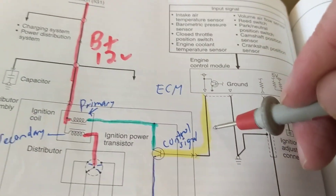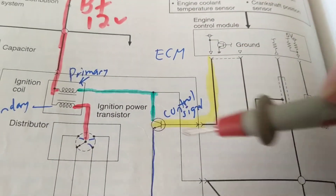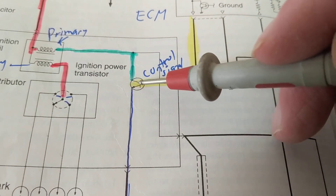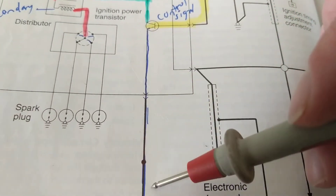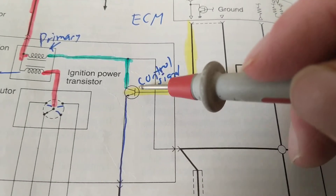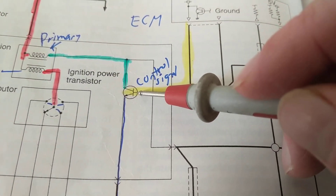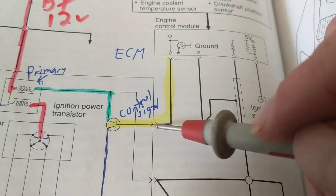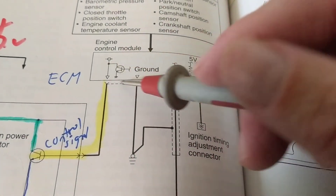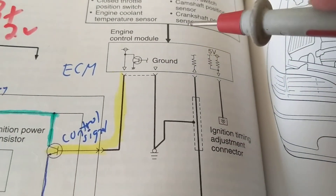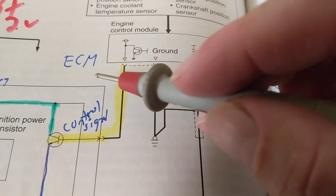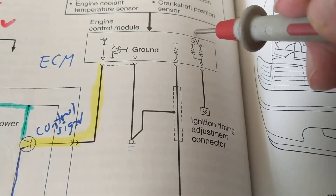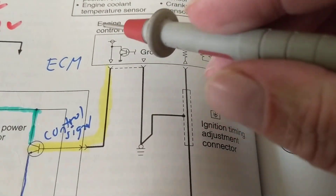We're going to replace the mechanical switch with a transistor. A transistor: this is the output, this is called the collector, and the emitter goes to ground. We toggle the transistor at this terminal called the base — not by a switch, but by the computer: the engine control module, PCM, ECM, or ECU.